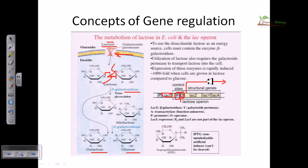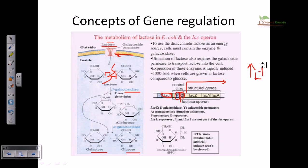Think logically: if you are a bacterium and you need to break down lactose to produce glucose and galactose for energy, then when there is a lot of lactose present in the environment, you would want to take it, break it down, and produce energy. So when there is a higher amount of lactose in the environment, you must produce a higher amount of beta-galactosidase enzyme to degrade it.